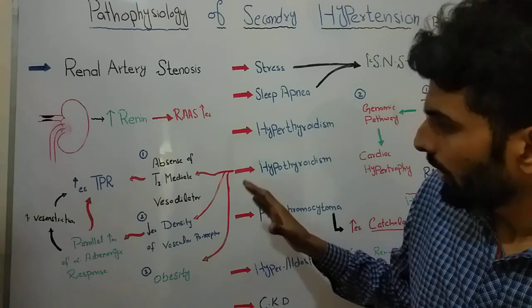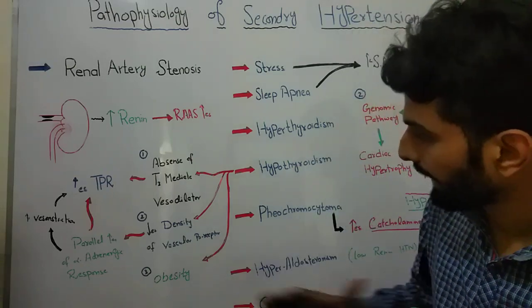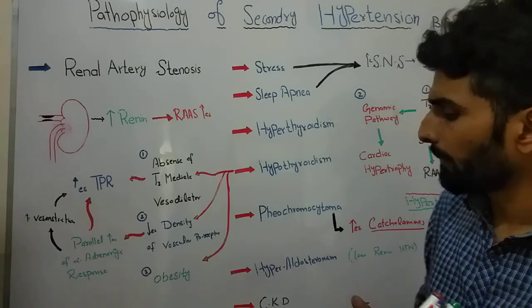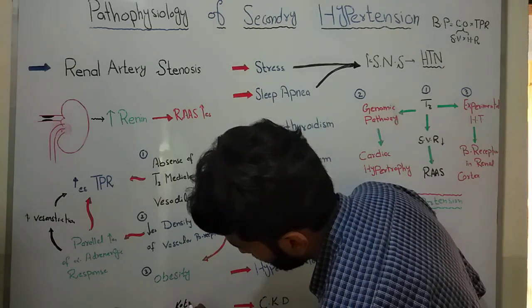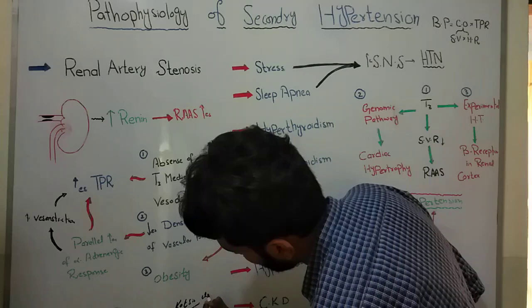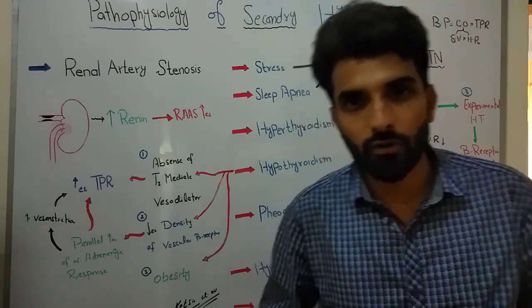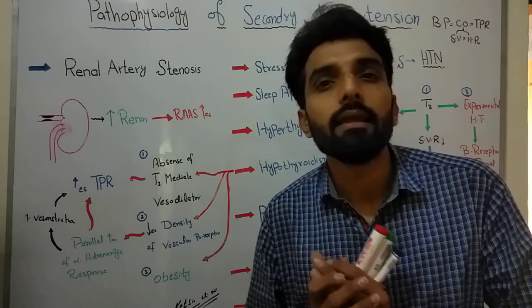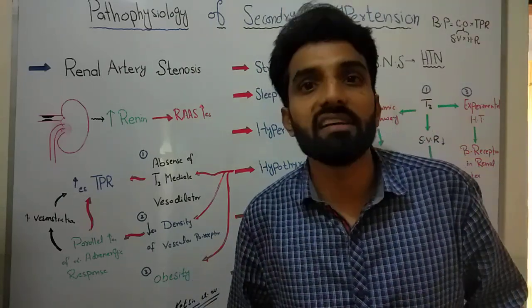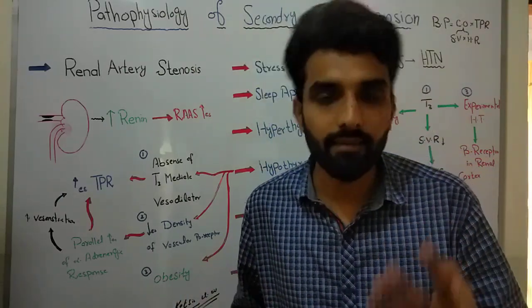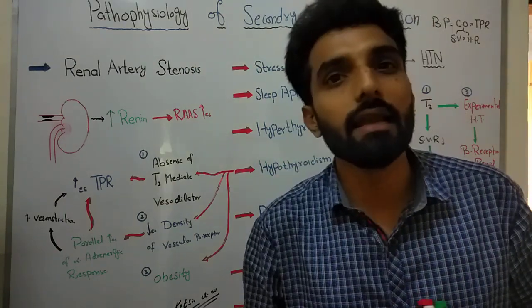It has been seen that hypothyroidism is directly linked with obesity, as explained by Cortezis et al. They are a group of researchers who explained that hypothyroidism can be linked with obesity. So obviously, if hypothyroid patients are obese, the chances of getting hypertension are increased. These are the possible mechanisms by which hypothyroidism can lead to hypertension.